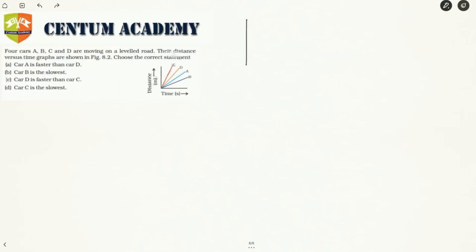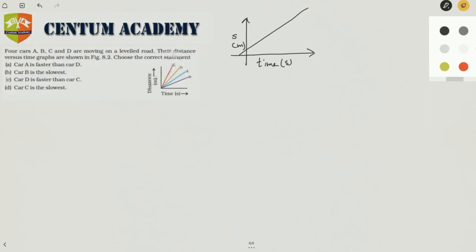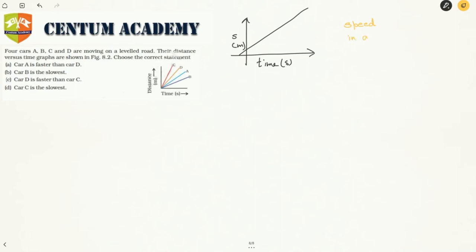So here is distance in meters and here is time in seconds. If there is a straight line, speed in a distance-time graph is given by the slope of the graph.